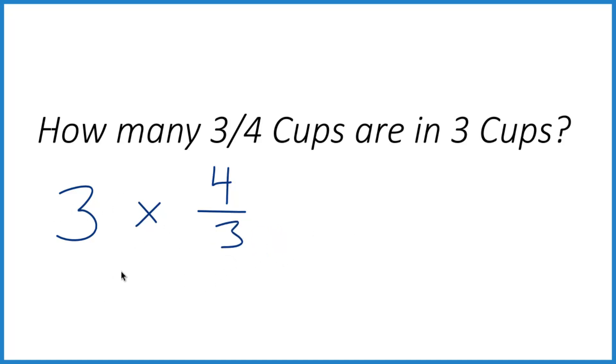Now we can just multiply. To make it even easier, we can take the three here and call it three over one, because three divided by one is still three. Now with fractions, when we multiply, everything lines up. Three times four is 12, one times three is three, and you get 12 over three.